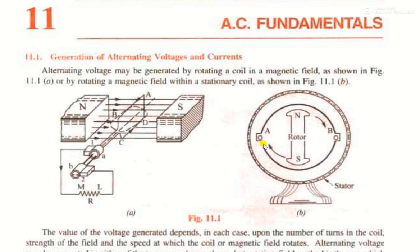The second case is that if we have a stationary conductor, we move the magnetic field so that, similarly, magnetic flux is cut. This converts mechanical energy into electrical energy. We call that electrical energy AC voltages and current, which is further connected via slip rings and resistance to the external circuit. This is how AC voltages and current are generated.